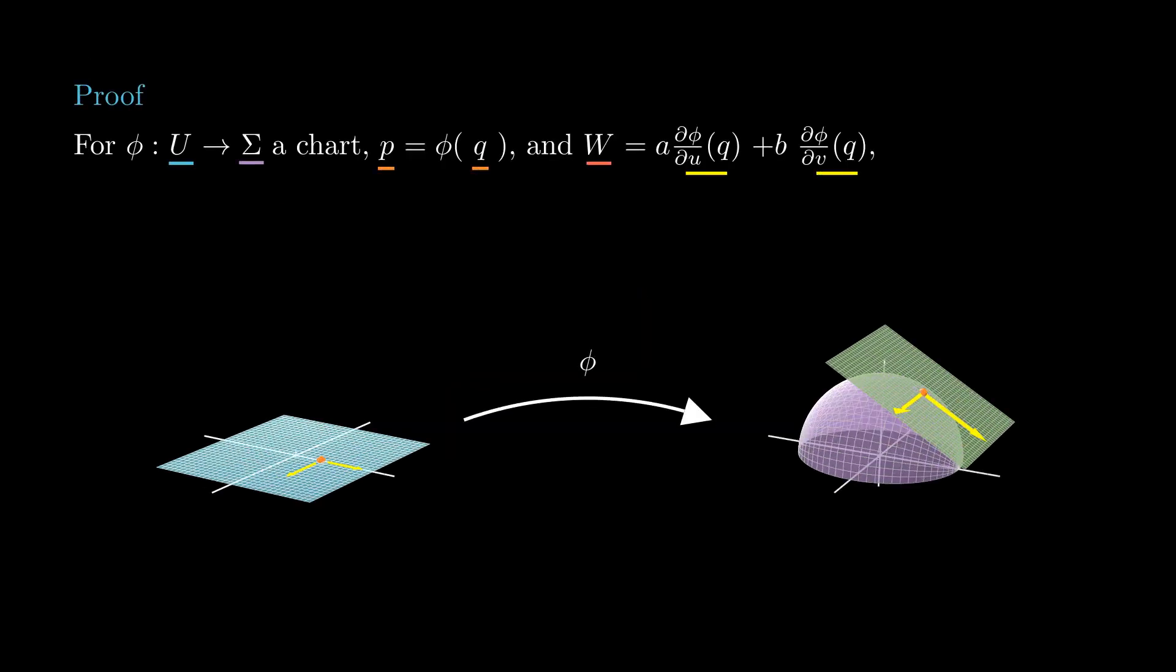First, we check that any vector of the tangent plane is obtained this way. A vector w of the tangent plane has the form a partial phi with respect to u plus b partial phi with respect to v. We need to find the curve in the surface passing through p, whose velocity at that time is w.